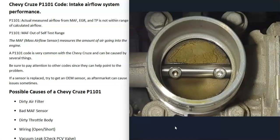One thing to mention: if you clean the throttle body really well, when you first start the car, that cleaner will need to burn off, so the vehicle will run rough for about one to two minutes until it's gone. But a dirty throttle body is another fix for this code on a Chevy Cruze.